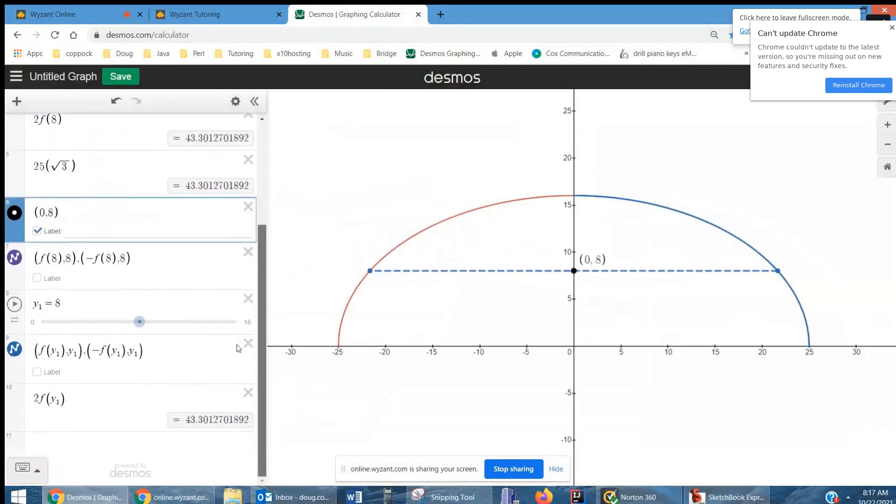There's a picture of what's happening where I let y sub 1 equal the height above the base. When it's 0, that distance is 50. But as I increase that height, the length of the base gets smaller and smaller.